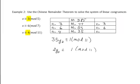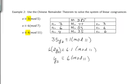To find y3, we solve 35y3 congruent to 1 mod 11. Reducing 35 mod 11: 11 goes into 33 with remainder 2, so we get 2y3 congruent to 1 mod 11. The inverse of 2 mod 11 is 6, since 2 times 6 is 12, which is congruent to 1 mod 11. Multiplying both sides by 6 gives y3 = 6.